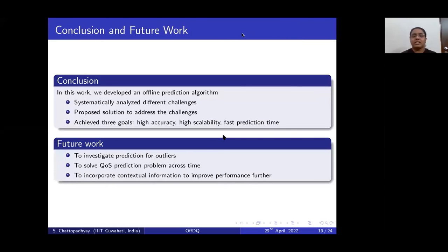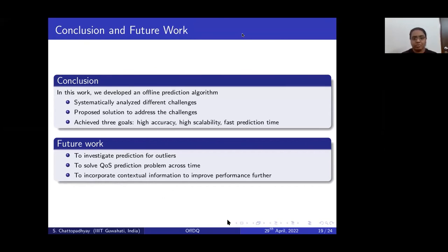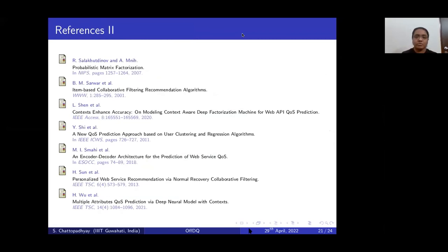In conclusion, we systematically analyzed different challenges and designed a QoS prediction algorithm that achieves high accuracy, high scalability, and fast prediction time. As future work, we will investigate an outlier prediction mechanism for this specific case, extend the model to handle QoS prediction varying across time or location, and explore incorporating contextual information such as user latitude, longitude, service deployment location, and IP address to further improve accuracy.